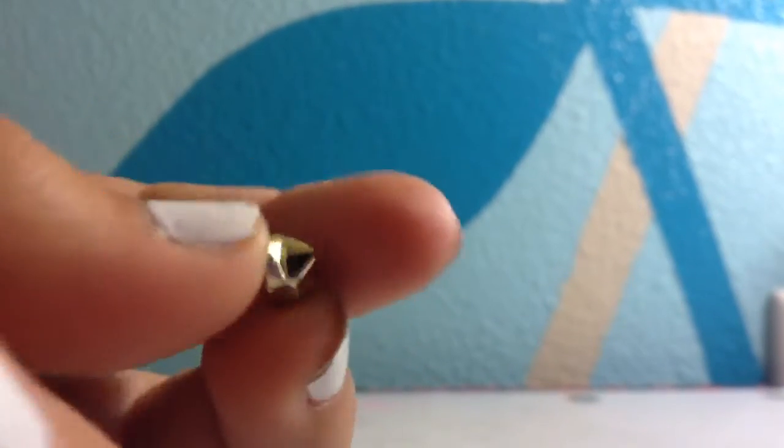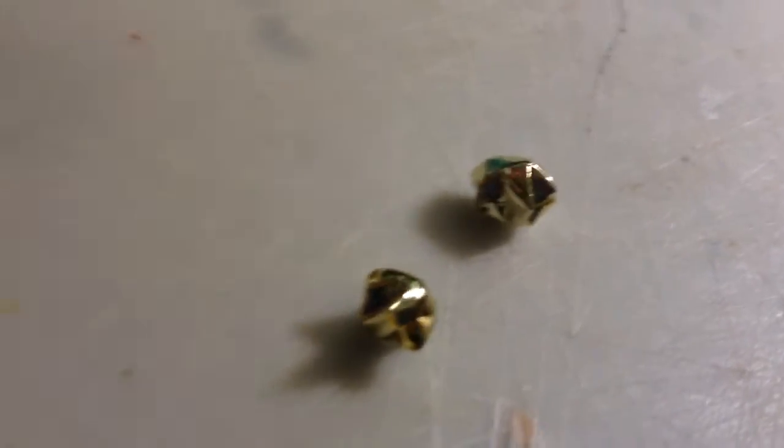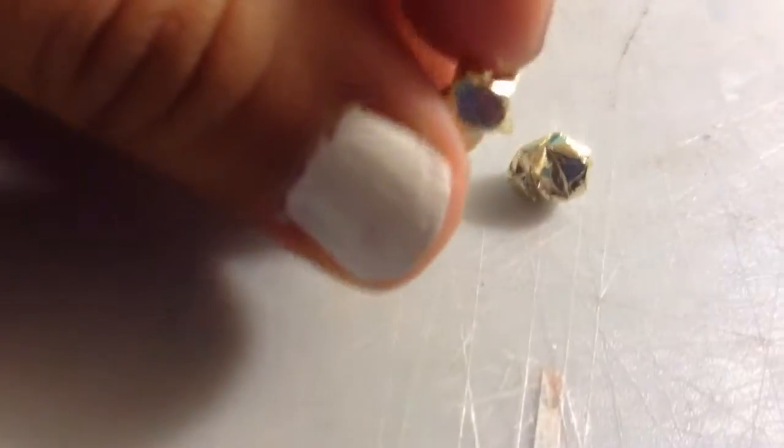Once you've pinched all of the edges, it should look like this. The pentagon has now been transformed into cute little puffy stars that look like the marshmallows from Lucky Charms.